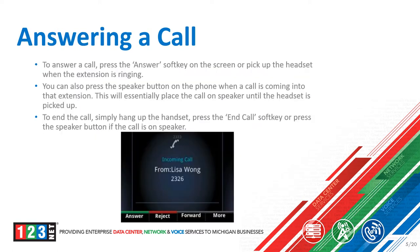When you receive a call, the image depicts what that will look like. You have several options to select from on an incoming call — you can either answer it, reject it, or select other options within the more selection. To answer a call, you could pick up the handset or press the answer soft key. You can also press the speakerphone button if you wish to answer on speakerphone. To end the call, you would simply hang up the handset or press the speakerphone button, however you are initiating that call.